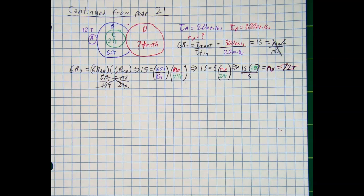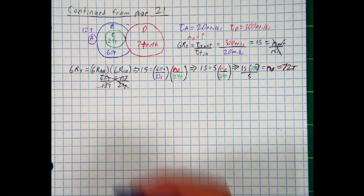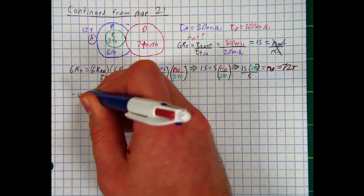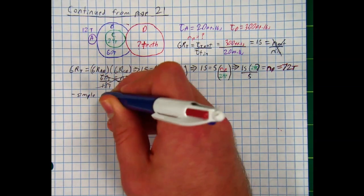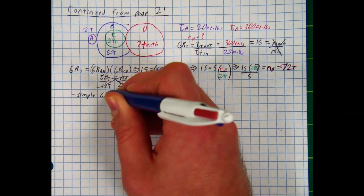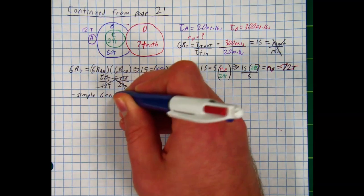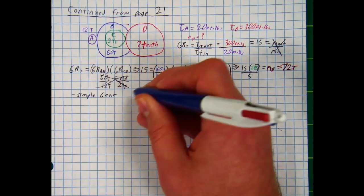Students often get confused by the difference between gear ratios and mechanical advantage. Gear ratios and mechanical advantage are not the same thing. In fact, simple gear trains do not even have mechanical advantage.